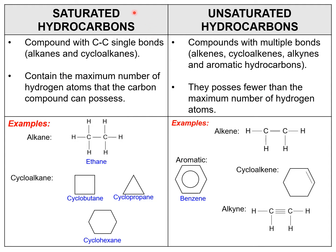The next thing I want you to know is about saturated hydrocarbons and unsaturated hydrocarbons. Saturated hydrocarbons are organic compounds that have carbon-carbon single bonds. Examples include alkanes and also the cyclic structure of alkanes, which are called cycloalkanes.